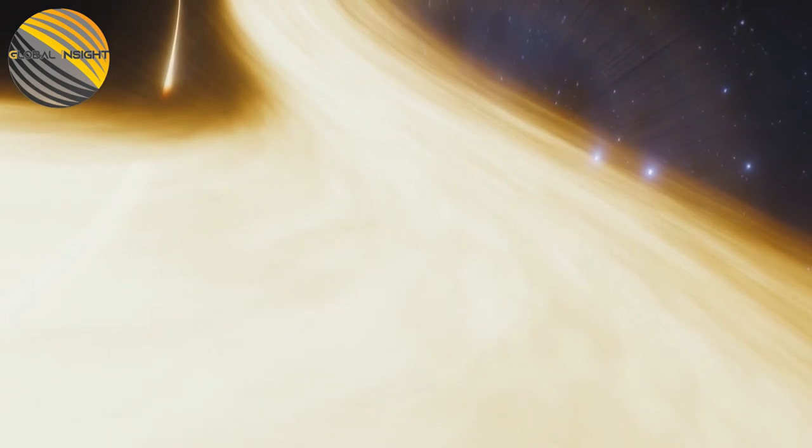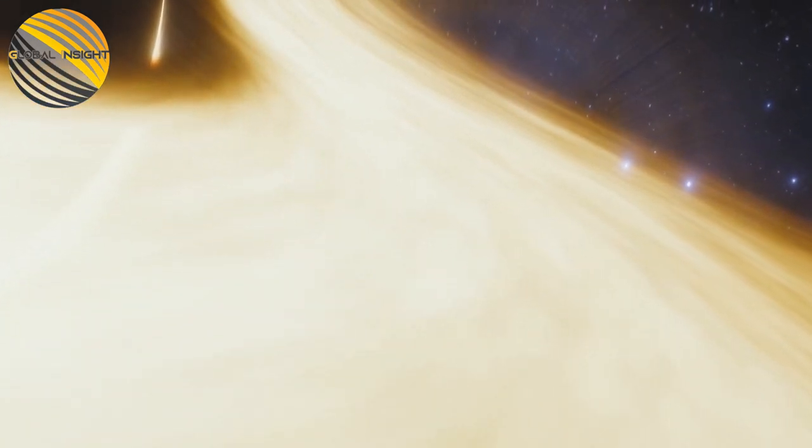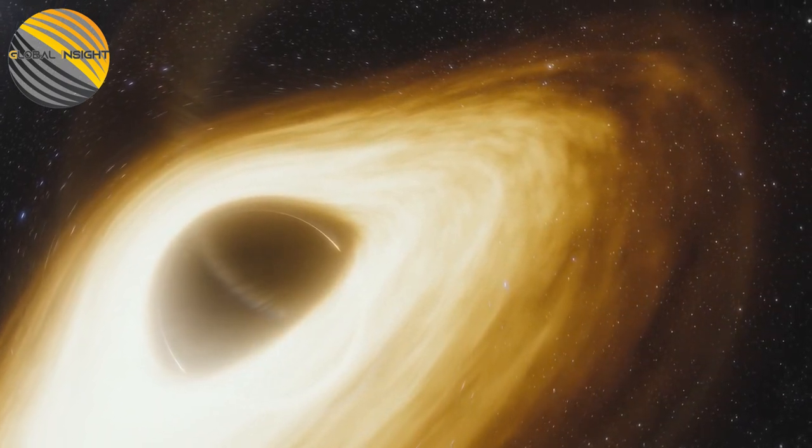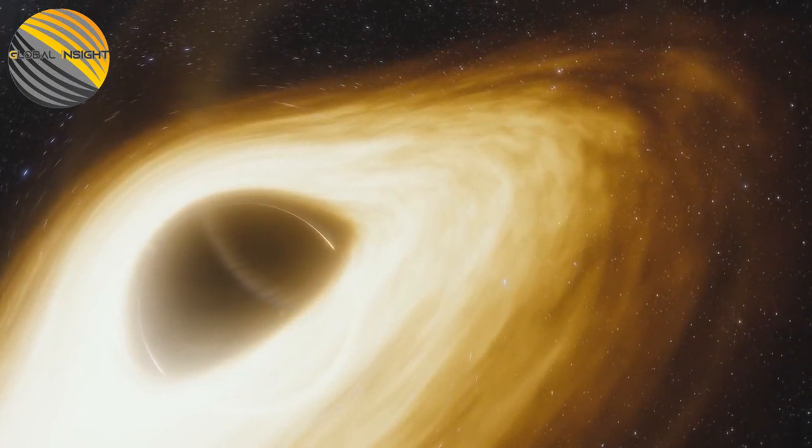The event horizon of a black hole is the boundary around the mouth of the black hole, past which light can't escape. When a molecule crosses the event horizon, it can't leave. Gravity is consistent across the event horizon.